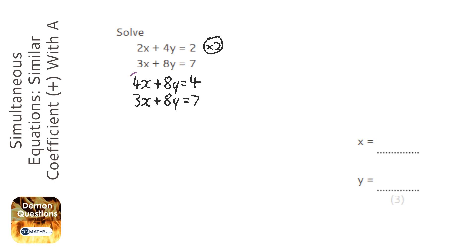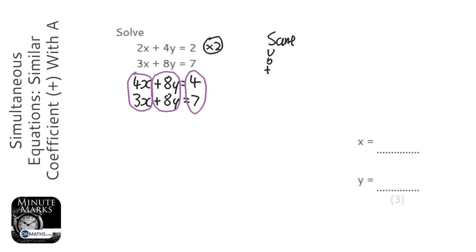Okay, so for simultaneous equations, we work downwards. So I'm just going to circle where I'm working. And we need to know the rule, and the rule is that the matching coefficient, if it has the same sign, we subtract. If it has different signs, we add. And it's that simple.